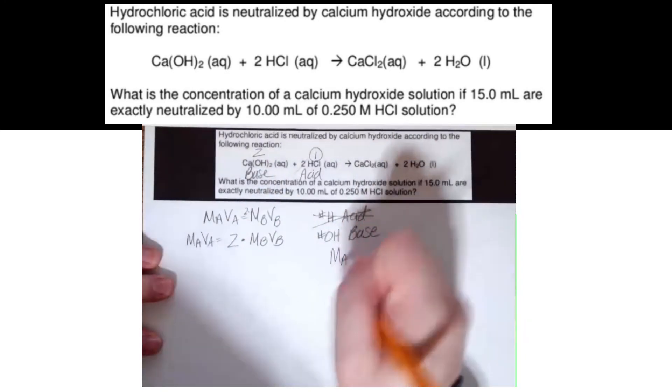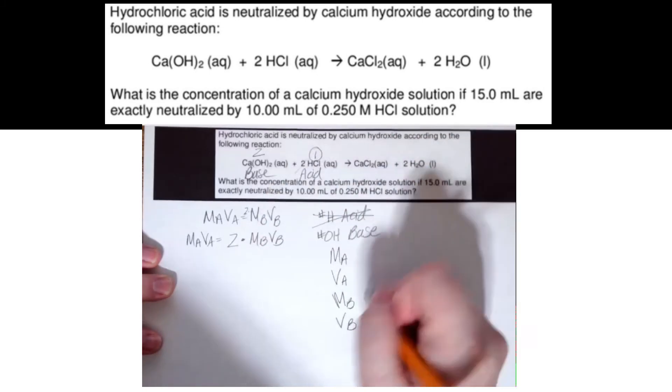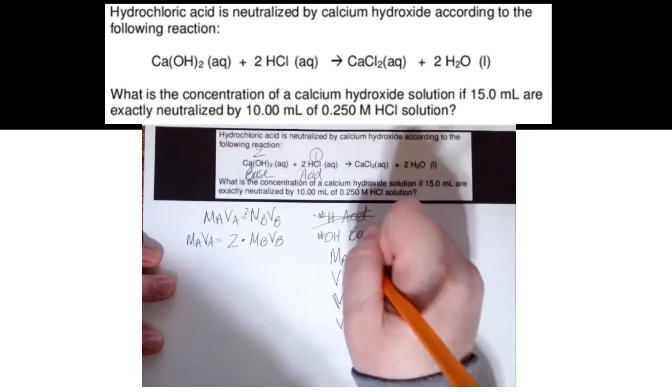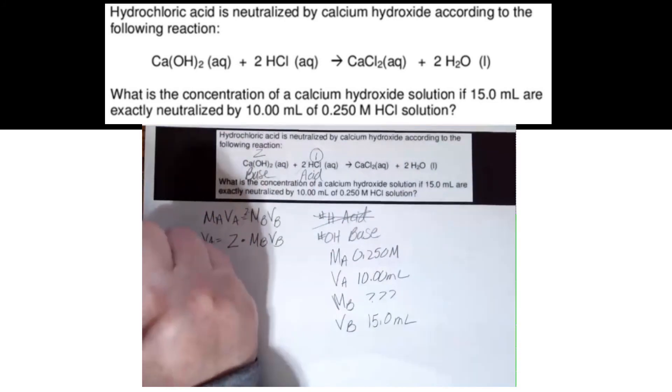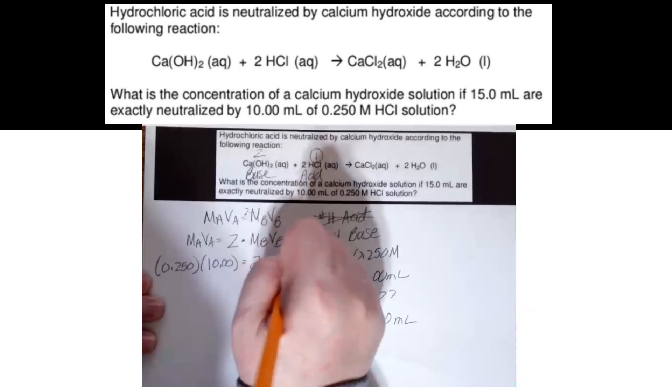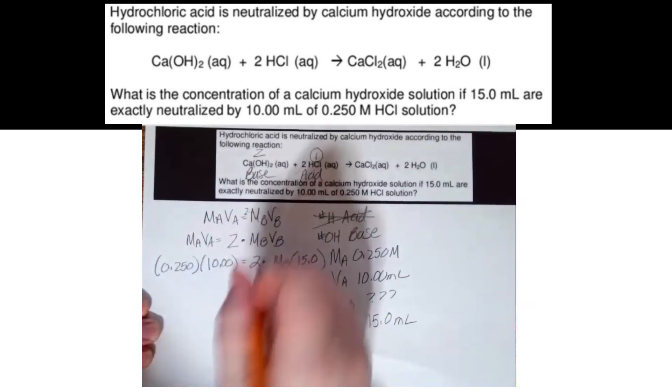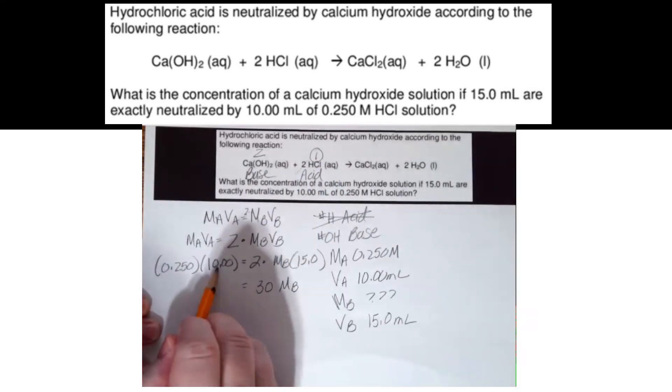So now let's see what I have for my values. MAVA, MBVB. So 15 milliliters is the base. 10 milliliters of the acid, 0.250 molar of the acid. What is the concentration of the base? So 0.250 times 10 equals 2 times MB times 15.0. So let's combine the things we can combine. Two times 15 is 30. So that's 30 MB on this side. 0.250 times 10 is 2.50.